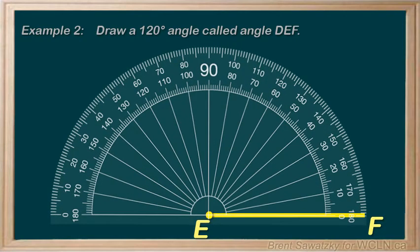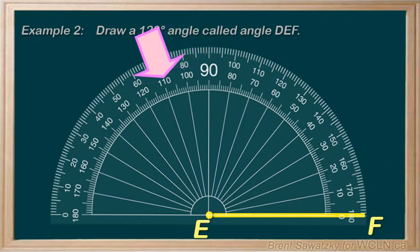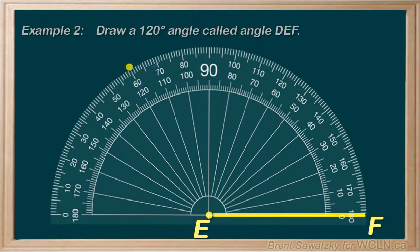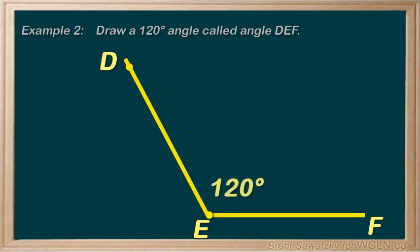Step 4: It's time to measure. From our reference line EF, we measure 10, 20 — let's jump up to 90 degrees — carry on, 100, 110, 120, and we make a little dot here at 120 degrees. Step 5: We draw our angle side DE by drawing a line that goes from E through our new dot, and we can mark it up here as D. We have our angle DEF, and we mark the angle as 120 degrees.